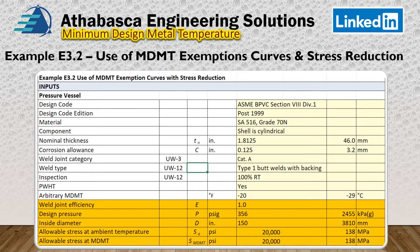The second example is a build-up of the previous example. It uses the same vessel, except there's more information provided. Just like last time, it's a co-design Division 1, post-99 vessel. Materials, cylindrical component, wall thickness, corrosion allowance — all exactly the same as the previous example. The new elements are shown in orange, and to do a more in-depth analysis, you need to know more about the geometry, such as the diameter, pressure conditions, joint efficiency, and allowable stresses.